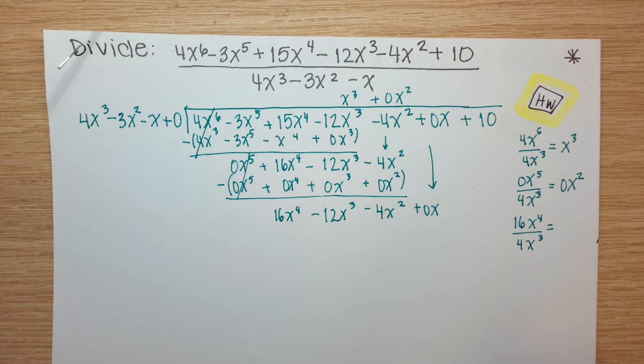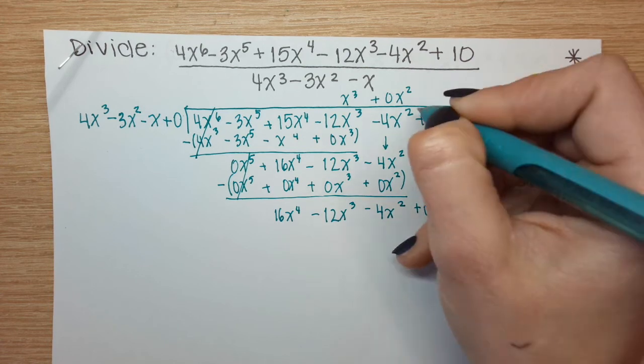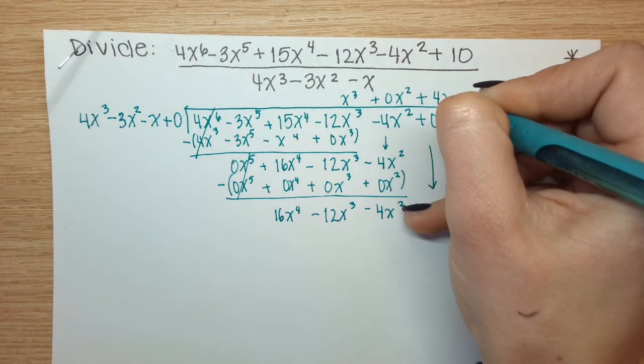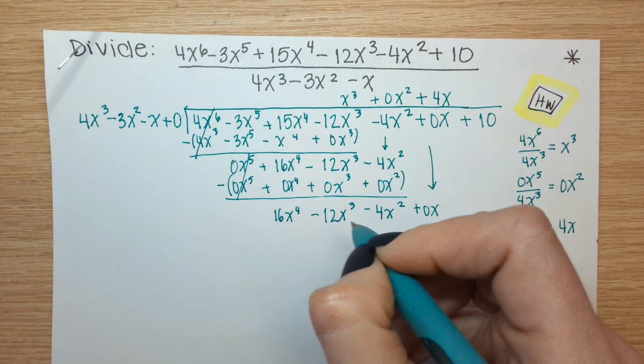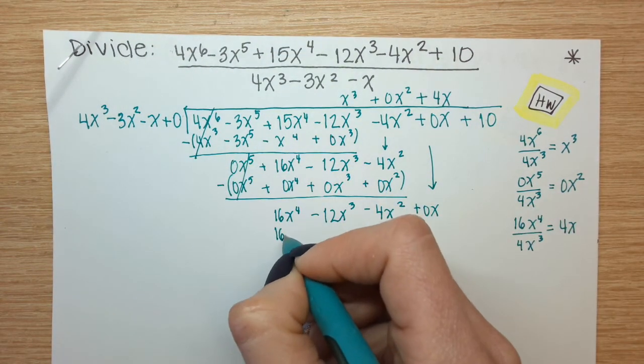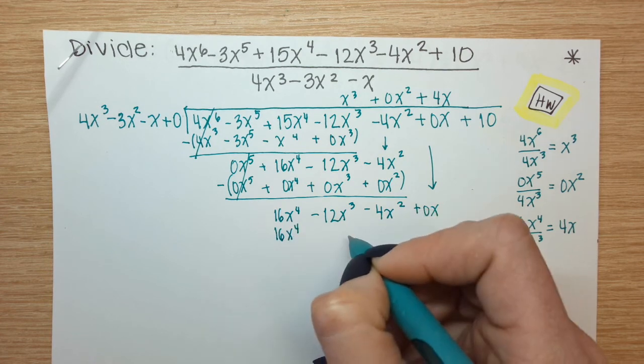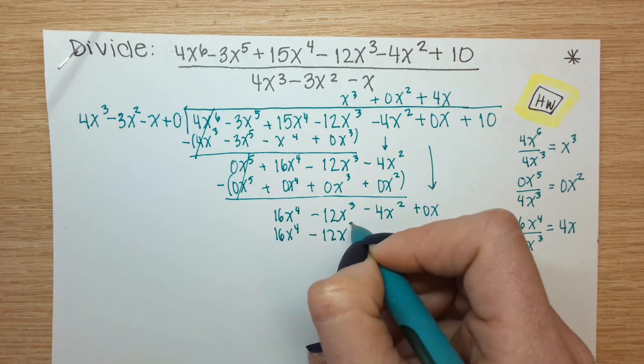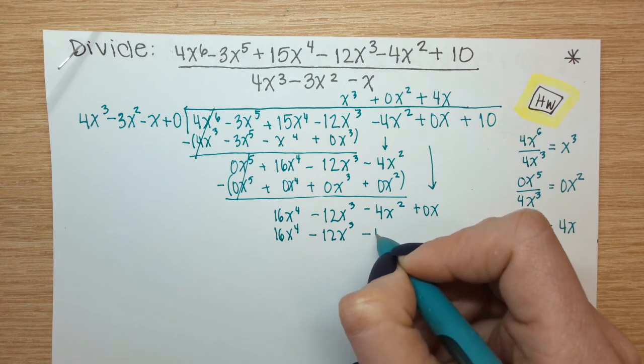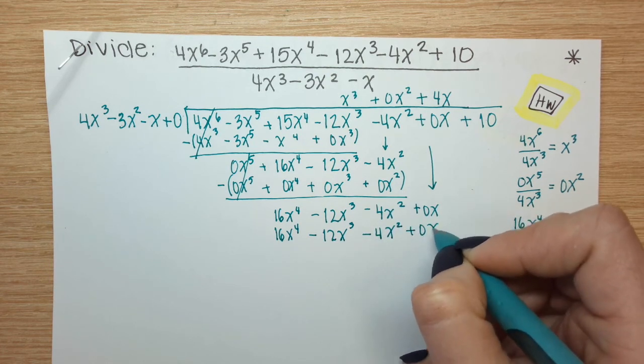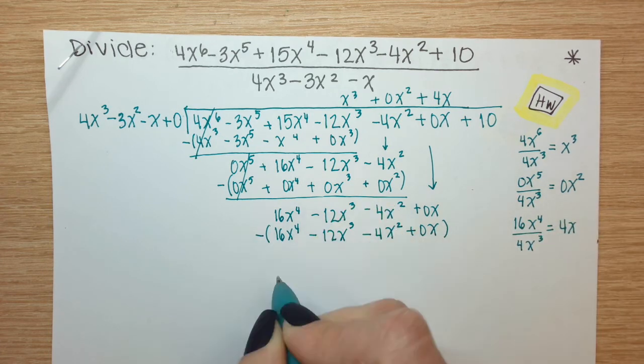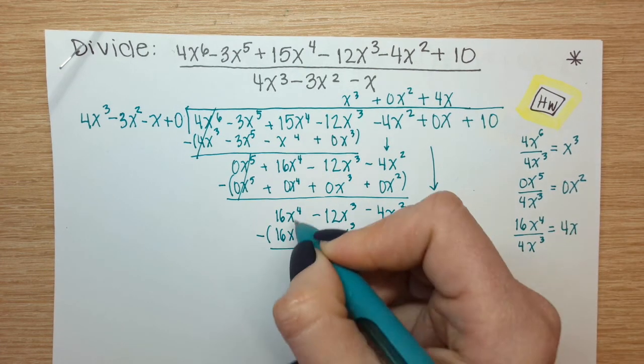Repeat, 16x to the 4th divided by 4x to the 3rd is 4x, I'll put a plus sign in front. Multiply it through all 4 terms, parentheses, minus sign, underline, cancel.